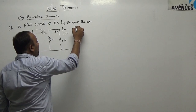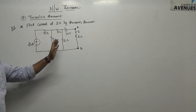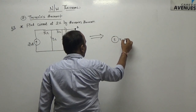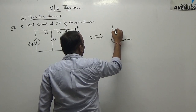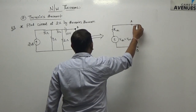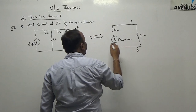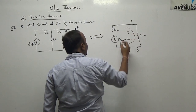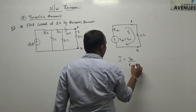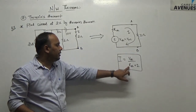As per Thevenin's theorem, just assume this point as A and B. The left part from A to B will be replaced by Vth and Rth. The equivalent diagram will be Vth (Voc), and this is the Rth. This is point A and B, and here the 2 ohm is connected, and current I is flowing here. Then I equals Vth divided by Rth plus 2. That is the answer.